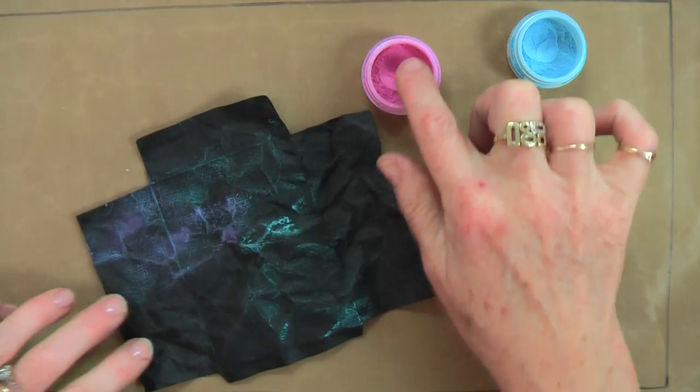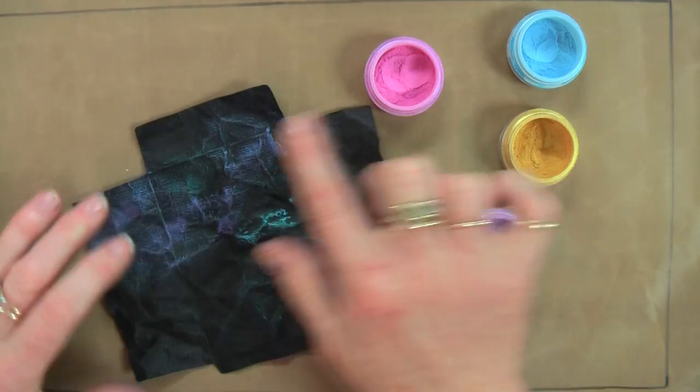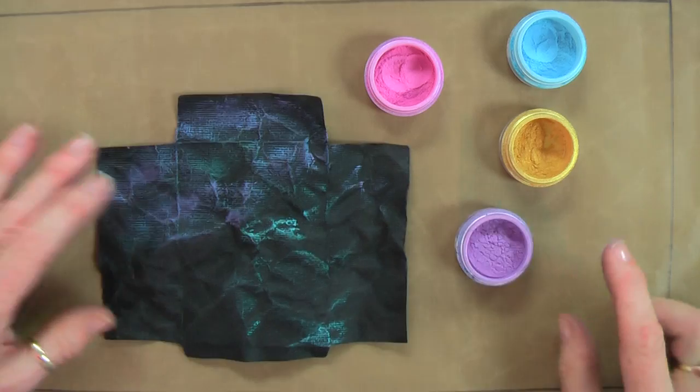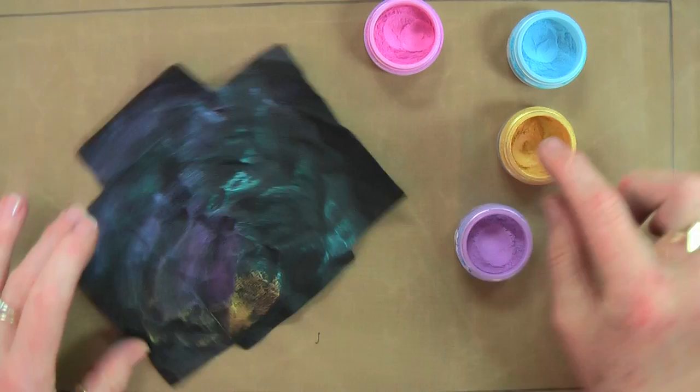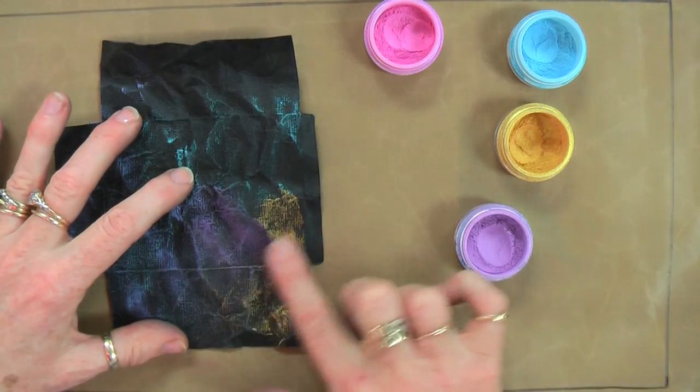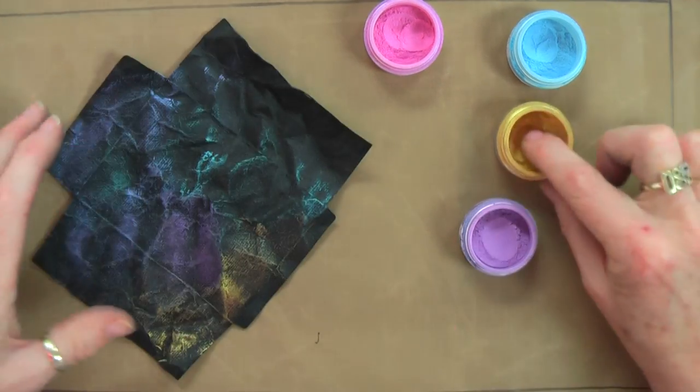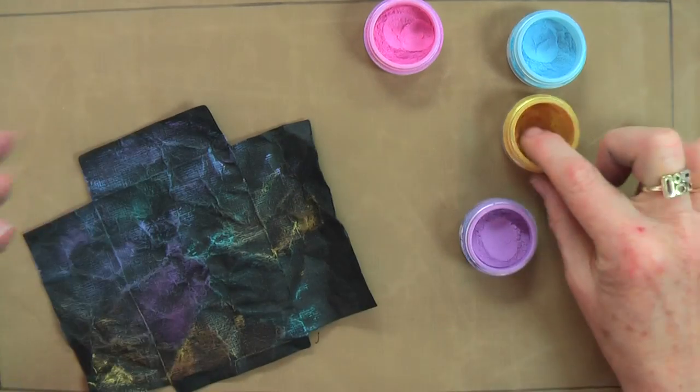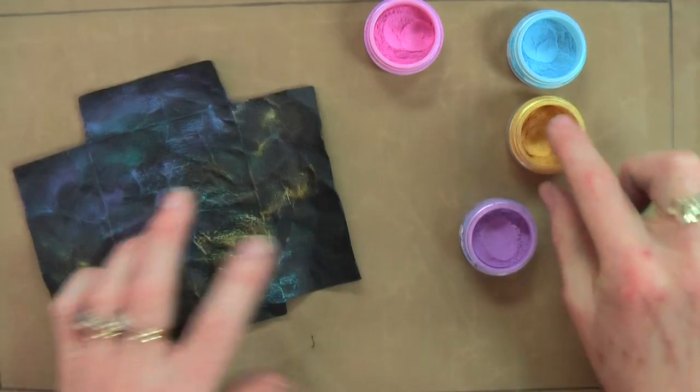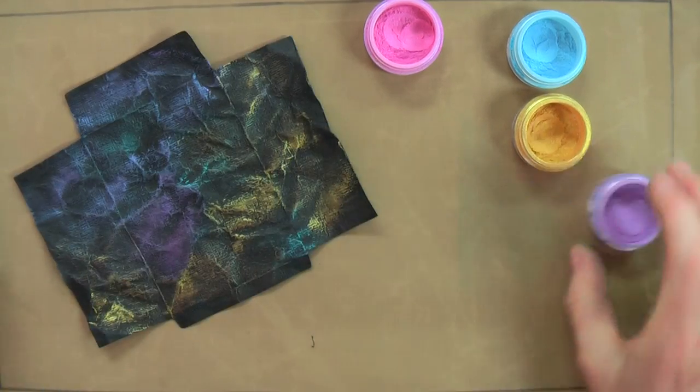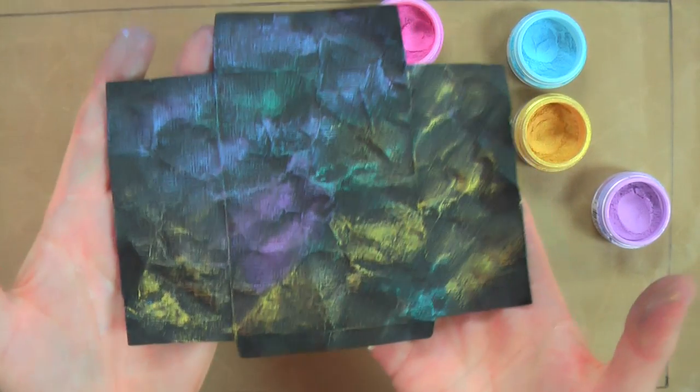This one's an interesting one. It looks pink in the little jar. But when you put it on, it goes this beautiful, mauvey kind of colour. You can already see the beautiful sheen coming up. And with these Perfect Pearls, they've got a medium in them that the minute they touch anything moist, they actually will set and they won't rub off once they're dry. So there's my background all done.